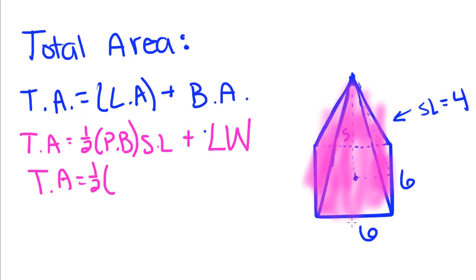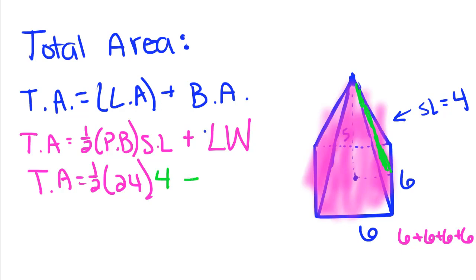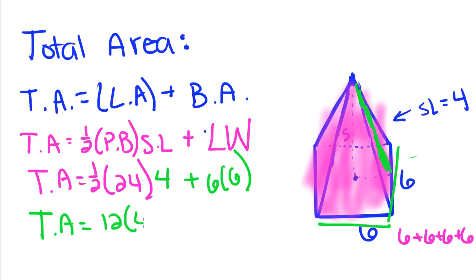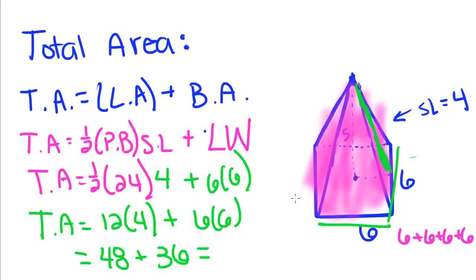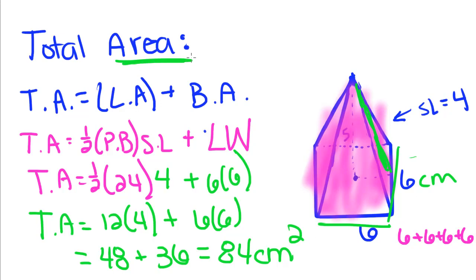The total area is one-half times the perimeter of the base — six plus six plus six plus six, which is twenty-four — times the slant height, which is drawn in for us and is four, plus length times width, which is six times six. So: one-half of twenty-four is twelve, times four is forty-eight, plus six times six is thirty-six. Adding those together gives us eighty-four centimeters squared, because area is always a two-dimensional measurement.